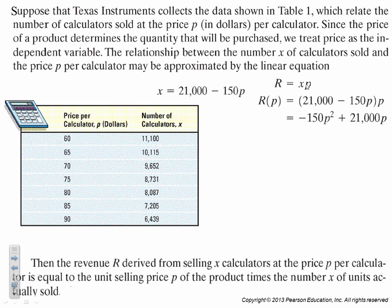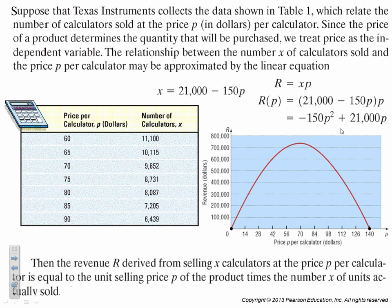Then the revenue r, this is what we care about, is derived from selling x calculators at the price per calculator. It's equal to the unit selling price p of the product times the number x, the number of units actually sold. So it looks like this, r equals x times p. So we know x is 21000 minus 150p times p. When we distribute that gives us our quadratic.